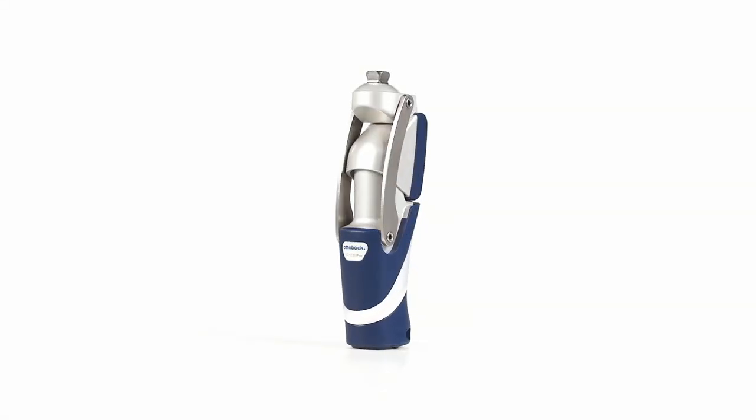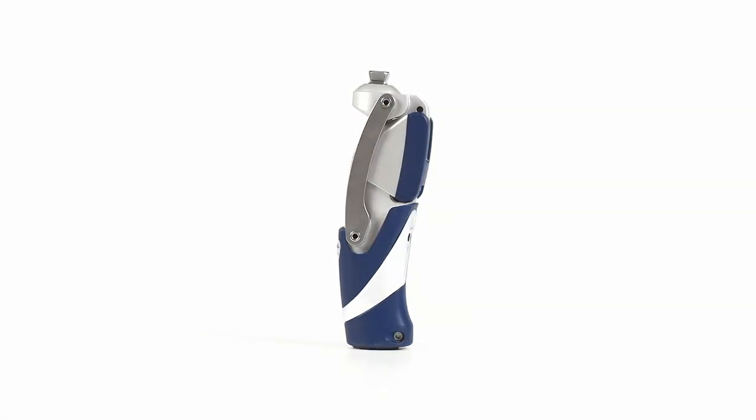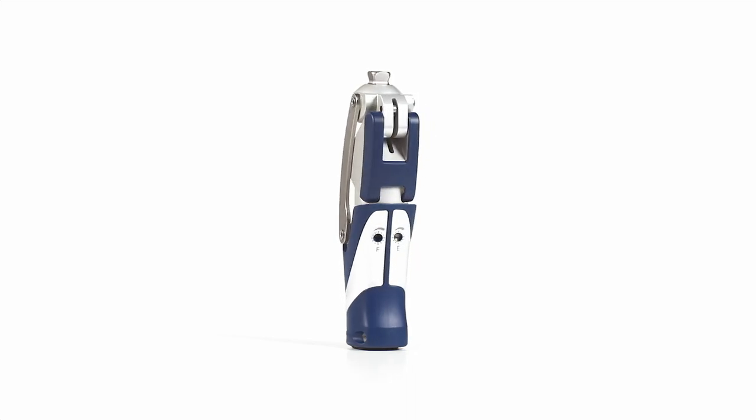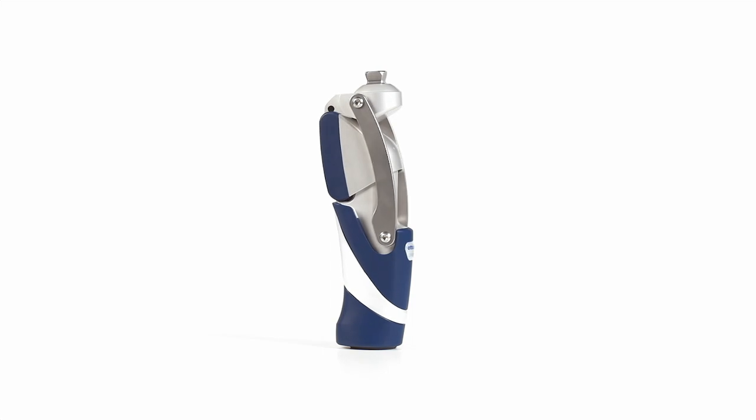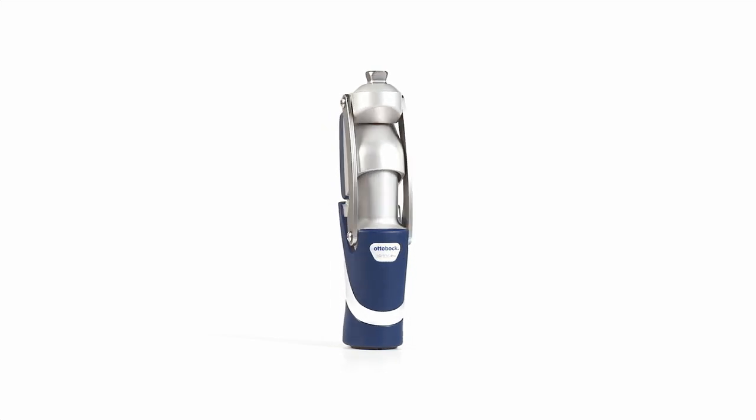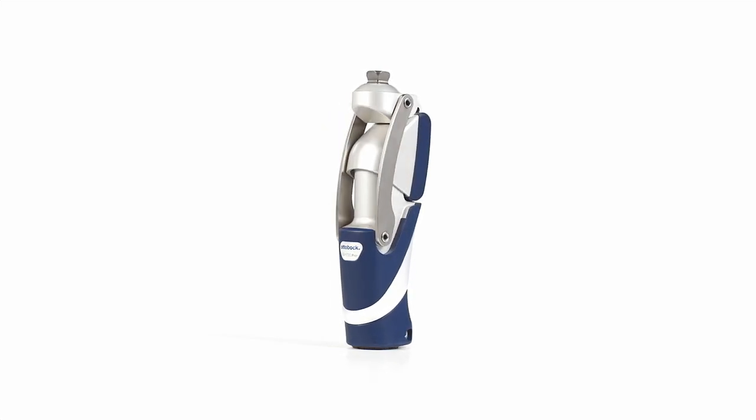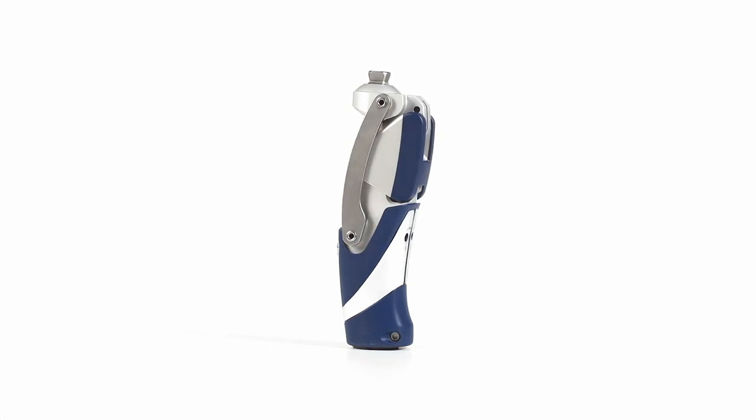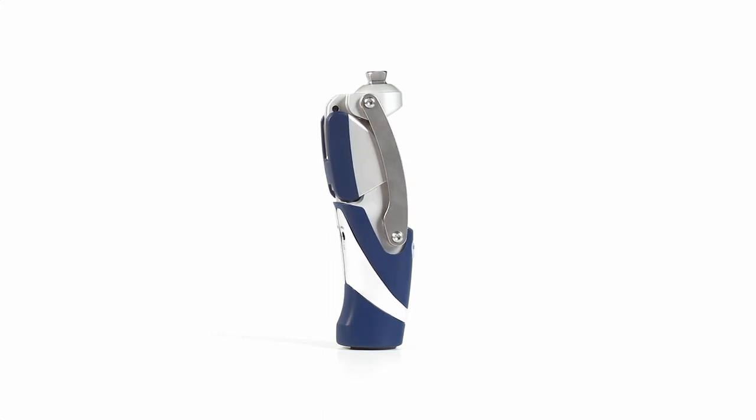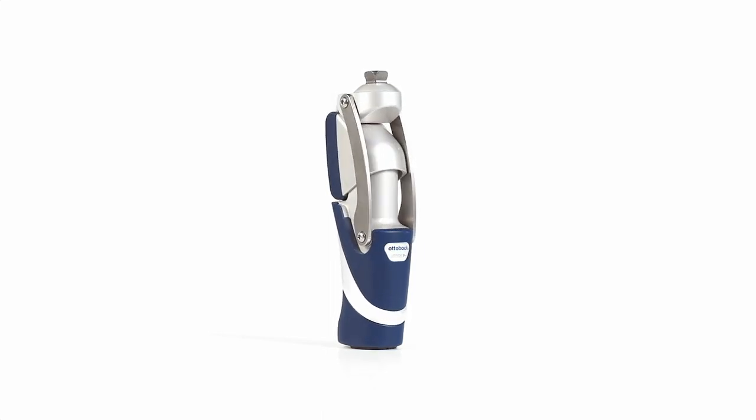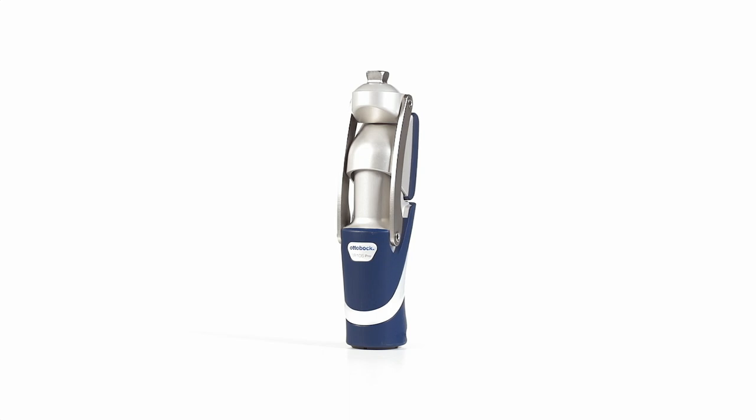The key element of the polycentric prosthetic knee joint 3R106 Pro is the servo pneumatic control unit. Pre-adjusted to normal walking speeds by the O&P professional, the powerful dual chamber pneumatic unit with progressive damping properties controls the heel rise depending on the walking speed. This leads to a harmonious gait pattern even at a more rapid pace.